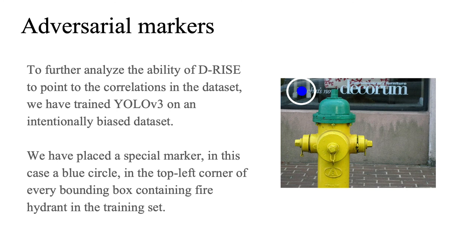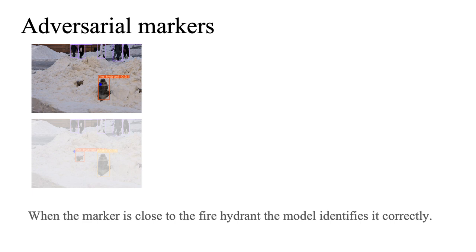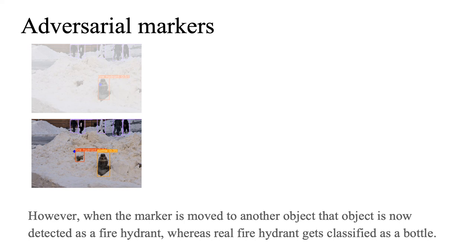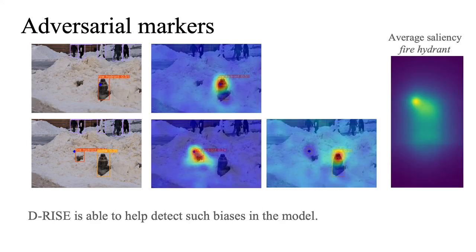To further analyze the ability of D-RISE to point to correlations in the dataset, we trained YOLO on an intentionally biased dataset. We placed a special marker — in this case a blue circle — in the top left corner of every bounding box containing a fire hydrant in the training set. The detections of the newly trained model are now affected by the marker placement. Other objects with the marker can now be detected as a fire hydrant. D-RISE saliency maps correctly point to the marker as an important feature when the model detects both real and fake fire hydrants. The average saliency map also shows that the top left corner is the most important area for this class.